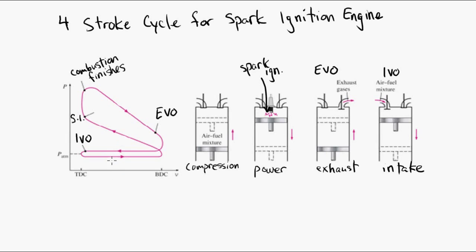So here's everything labeled on the PV diagram, where the valves open, where the spark ignition occurs, where combustion finishes, and here are the four strokes labeled on the curve.